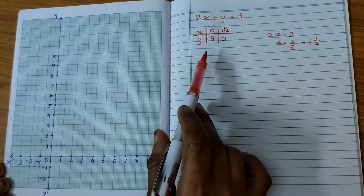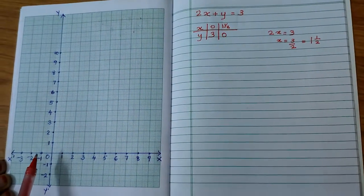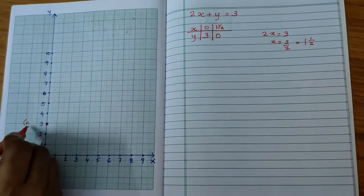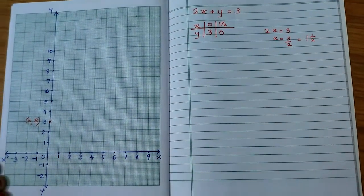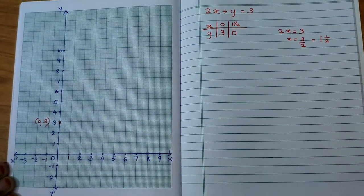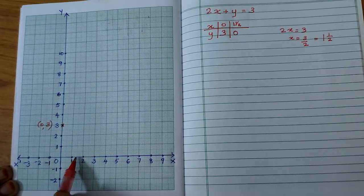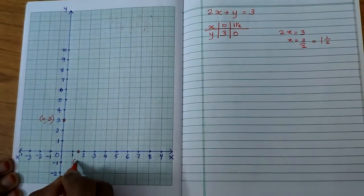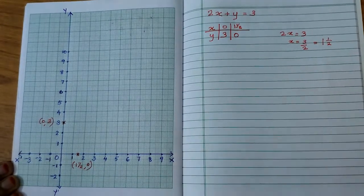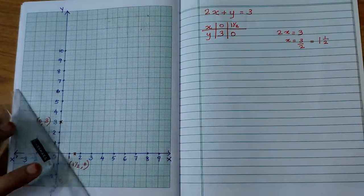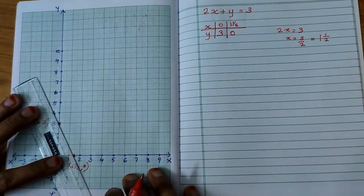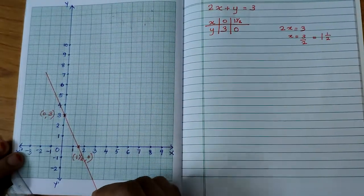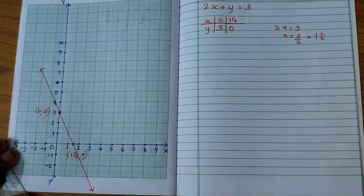Here the first solution is (0, 3). That means it lies on y axis. This is the point (0, 3). Next solution is 1 and a half, 0. 1 and a half means it lies between 1 and 2 in the middle on x axis. This is (1.5, 0). These 2 points are enough to draw the graph. Join these 2 points. We will get a straight line.